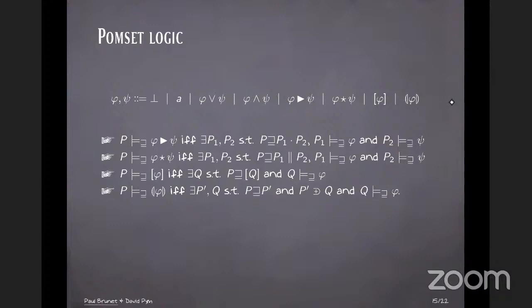But for the other ones, we define a satisfaction relation, parametrized by a relation. So we can talk about satisfying a formula up to isomorphism or up to subsumption, et cetera. And I'm going to read here what does it mean for P to satisfy phi then psi up to subsumption? It means that you can find two Pomsets, P1 and P2, so that P subsumes the sequential product P1 then P2, and P1 satisfies phi up to subsumption and P2 satisfies psi up to subsumption.